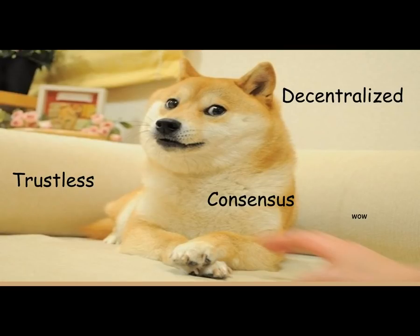Trustless, decentralized consensus — you're going to hear these terms a lot in the Bitcoin space. Trustless basically means that you can use the Bitcoin network without having to rely on some third party. Decentralized consensus means that every node in the network agrees on the transaction history.